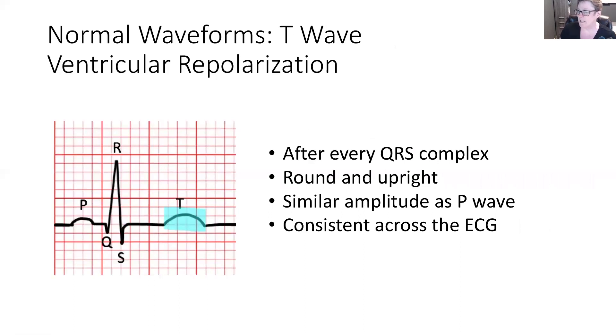Following that, we see that we return to isoelectric line, and then we have another positive round upright waveform. This would be known as the T wave, and this is when the ventricles are relaxing. And so this should occur after every QRS waveform. Round and upright is the normal. It should be similar to the P wave in terms of how high it is, its amplitude, and consistent across the entire ECG tracing.